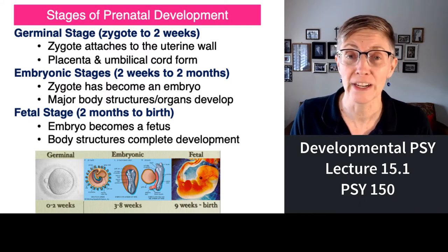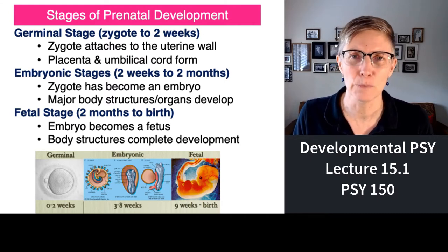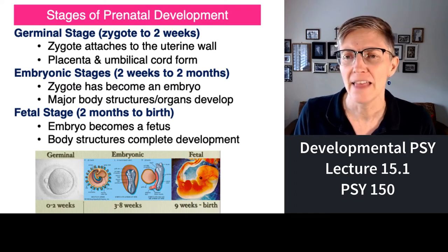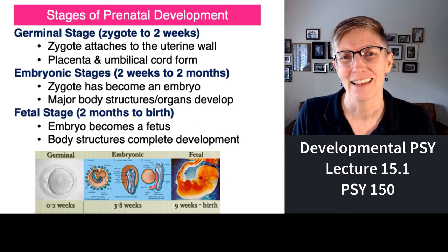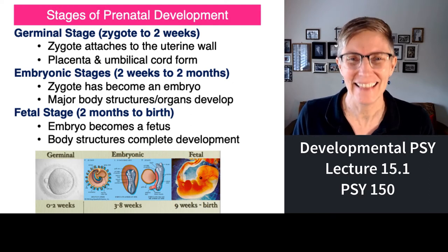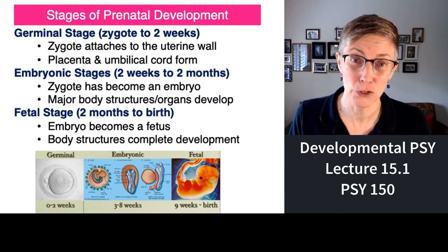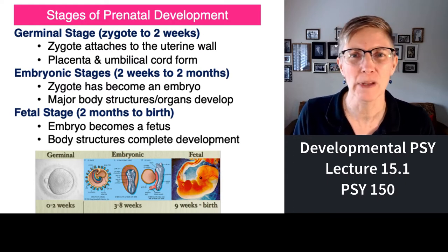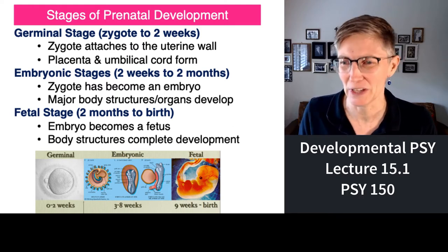The embryonic stage, when you were an embryo, is defined as two weeks to two months. During the embryonic stage, the major parts of the body start to develop, like the heart. Then there's the fetal stage — we refer to you as a fetus from about two months until you're born. When the embryo becomes a fetus, you can really see that something approximating a human is happening.